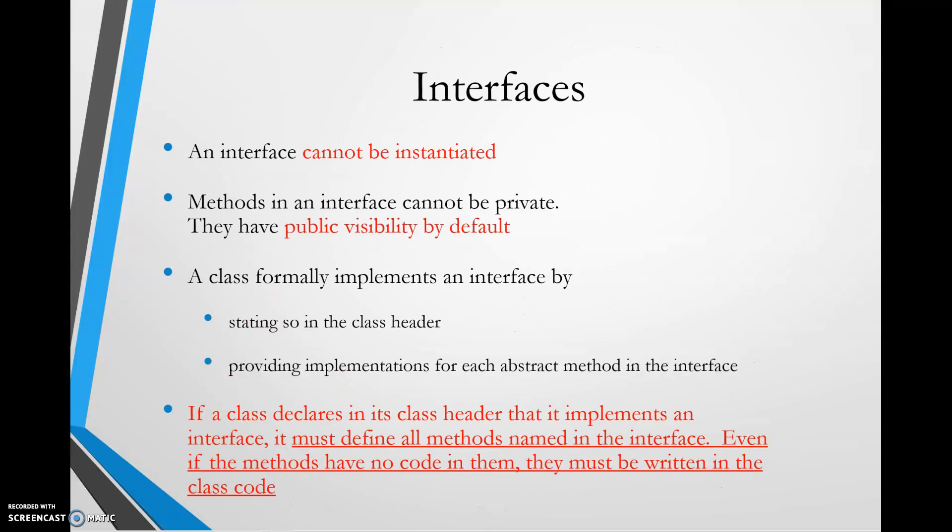Okay, so here are some ground rules for interfaces. First of all, they cannot be instantiated. That means that you cannot create an object of this type. It is so abstract that it does not make sense. You just can't create an object. All of the methods in the interface have to be public. All methods in an interface cannot be private, they have to be public.